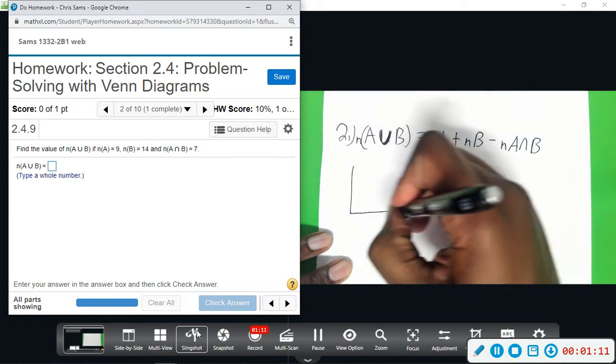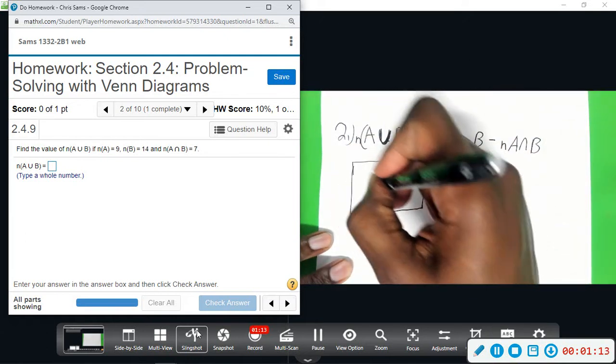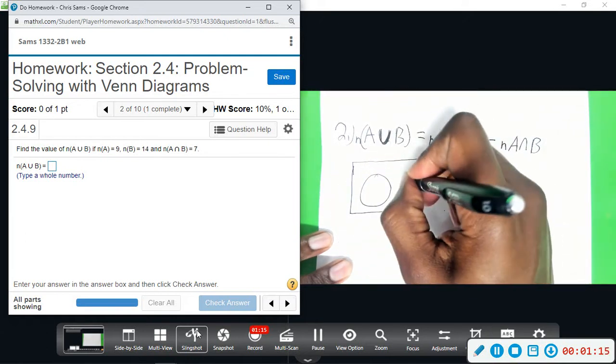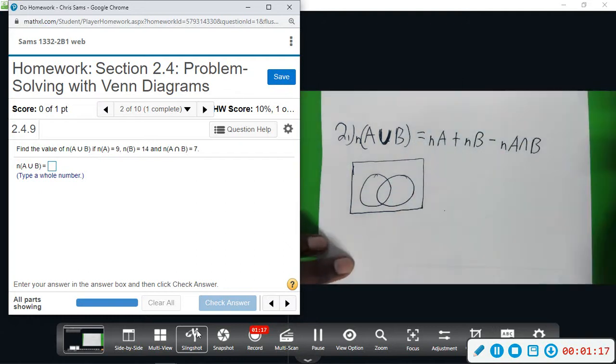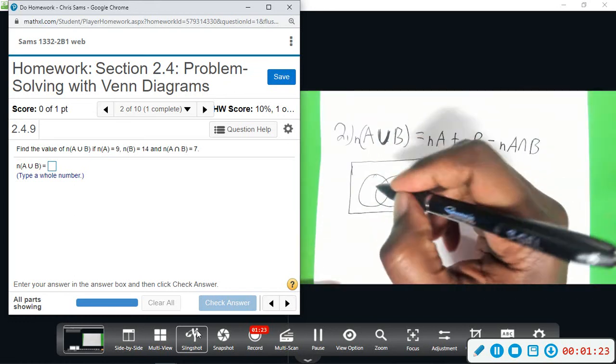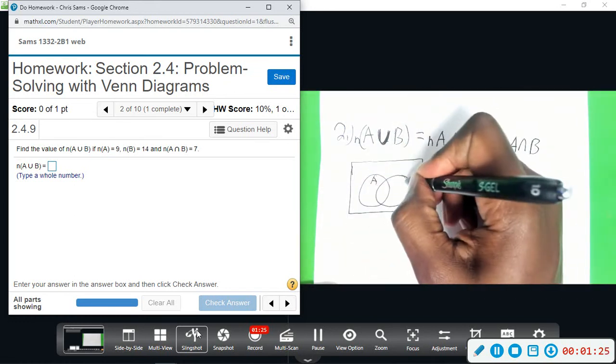A union B, let me do a pencil so I can erase it and you'll be able to see it. I can do a pen, it doesn't matter. This is A, this is B.